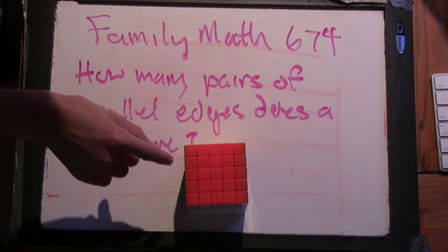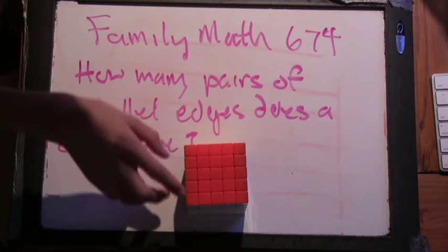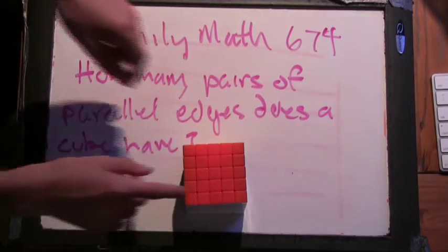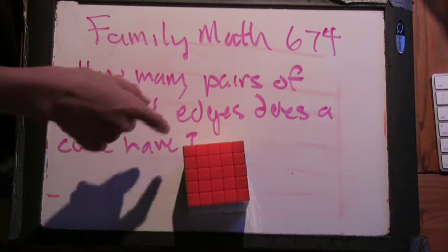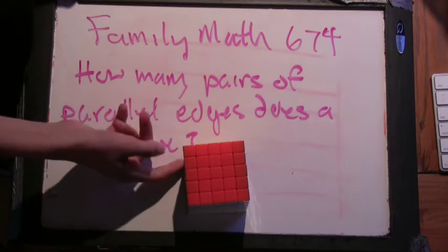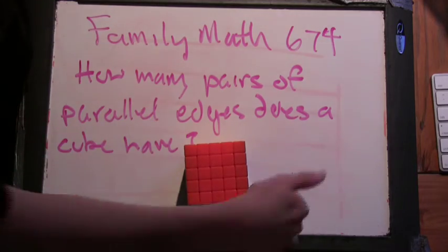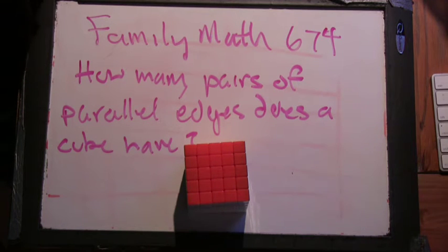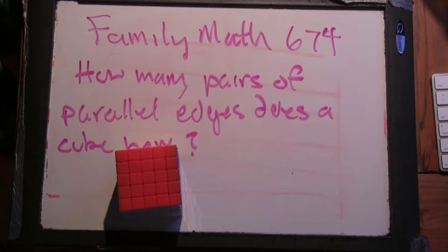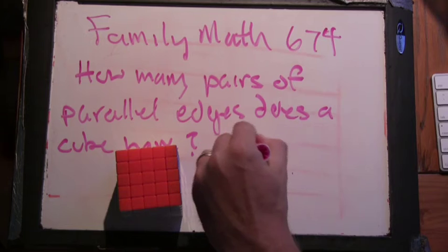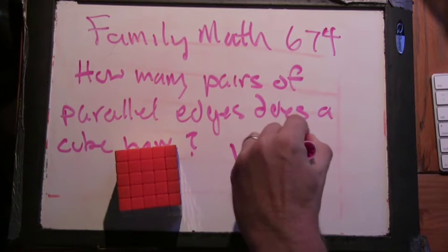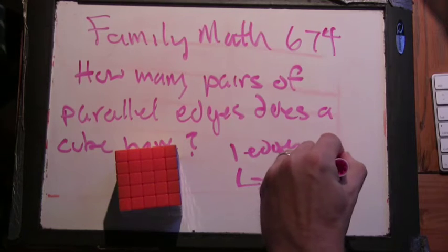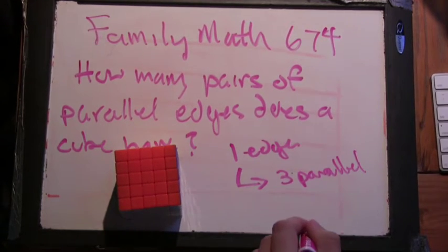So for this edge here, we already have this pair here. That's one. There's this one down here, that's two. This one over here, that's three pairs of parallel edges. Okay, awesome. So one edge has three parallel edges.